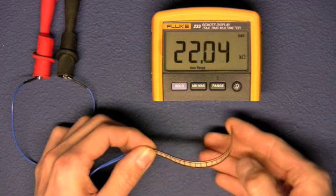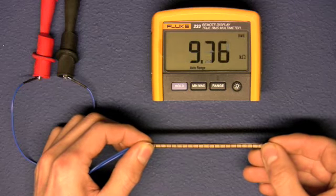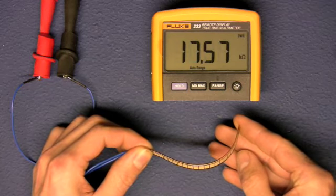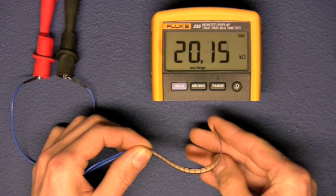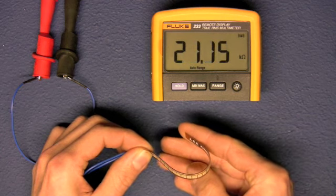The further it's flexed, the higher the resistance. When it's straightened out, it's somewhere around 9K. When it's fully flexed, it goes all the way up to somewhere around 22K.